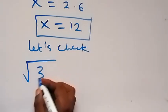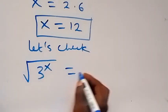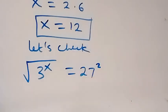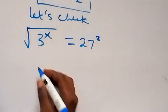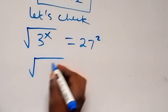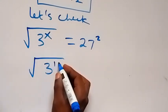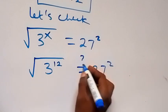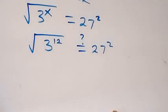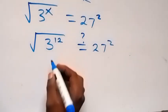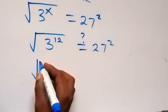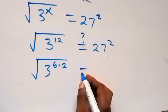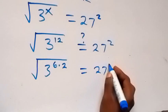Now we have x equal to 12, so this becomes: square root of 3 raised to power 12, equals to 27 raised to power 2. We can write 12 as 6 times 2, so that is square root of 3 raised to power 6 times 2, equals to 27 raised to power 2.